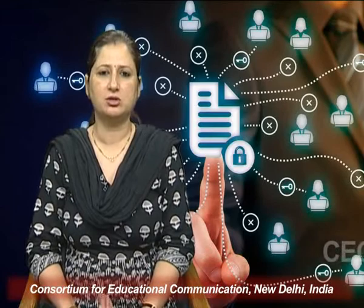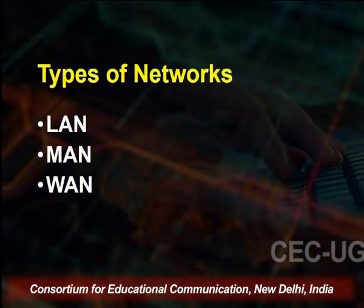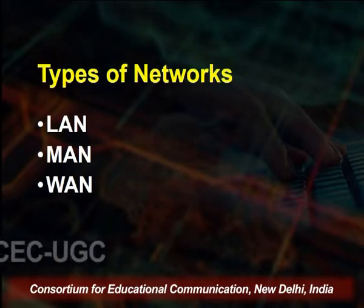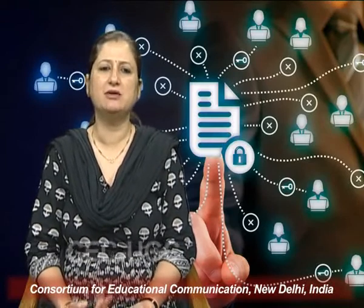Besides this, we had also discussed the important types of networks based on their size or the number of nodes or devices connected. We talked about three types: the local area network, which is relatively smaller and confined to a building or campus; the metropolitan area network, used to connect offices of the same company spread across a city; and the wide area network, which is a boundary-less network encompassing the entire earth — the global network or the internet.